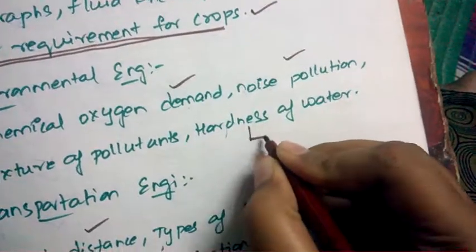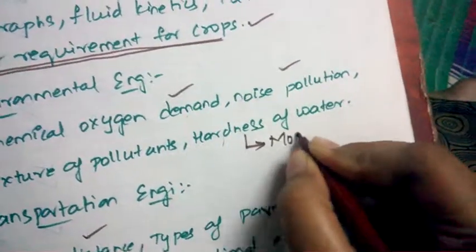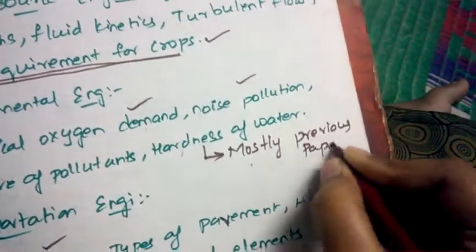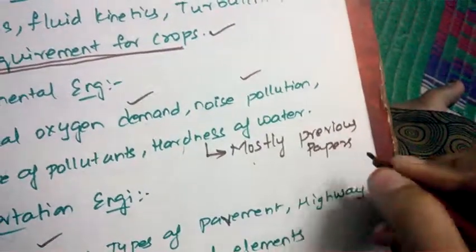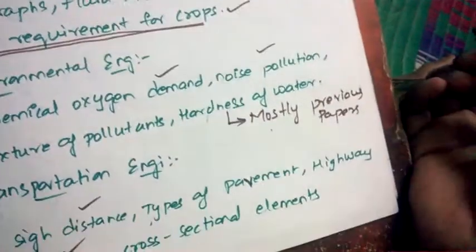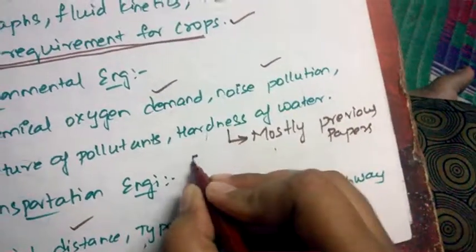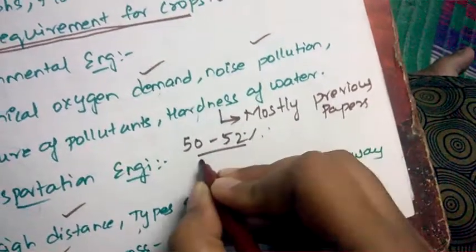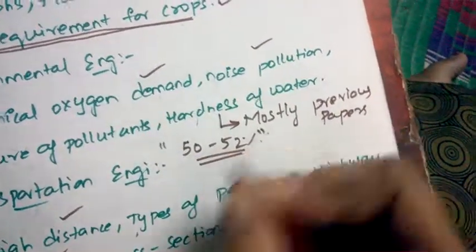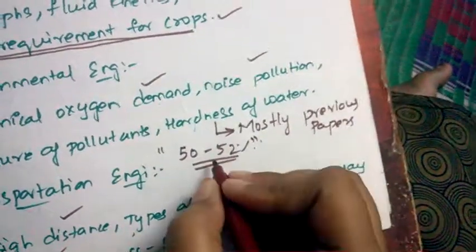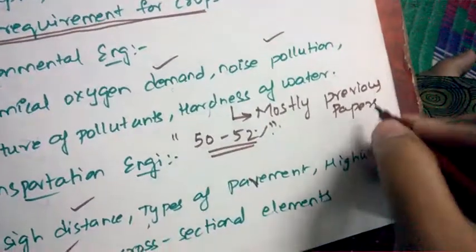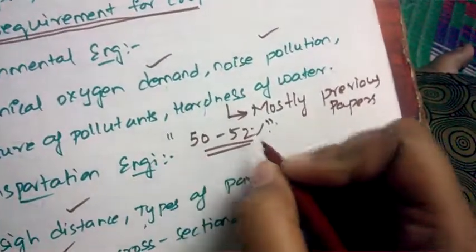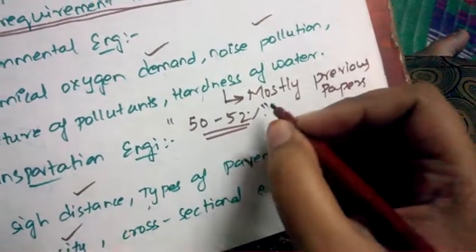By solving previous papers continuously, you'll know what sort of questions can be asked. Mostly, coming to civil engineering, I think around 52 percent of questions will come from previous years only. If you solve previous papers, you'll easily understand how to solve the present year's papers as well, because mostly 50 to 52 percent of the questions will be of a similar form every year.